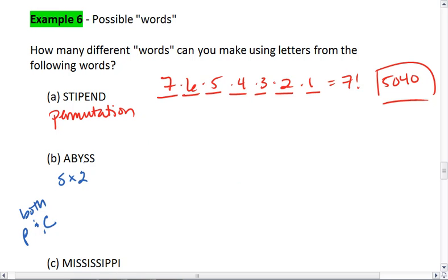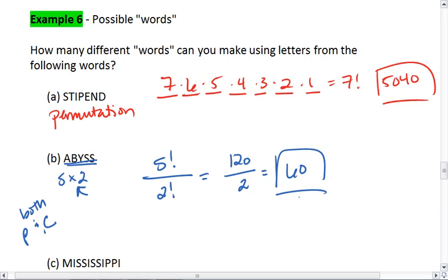What we do is we still figure out how many letters we have total. So we have 5 letters, which gives us 5 factorial. But we want to divide by our repeating letters. So we're going to divide by 2 factorial, which accounts for all the different ways to swap out your s's. We know that 5 factorial is 120, 2 factorial is 2. And this gives us 60 different ways to rearrange the letters in abyss.